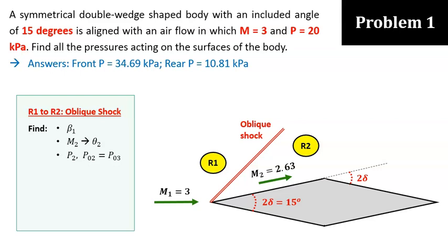Now, this is a doable problem since we've learned about oblique shocks before. If you do this part properly, you'll get M2 equals to 2.63 and P2 equals to 34.69 kilopascal. You will also need to calculate P02 here, because it will be used later to calculate the flows in region 3.